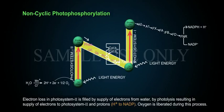Electron loss in photosystem 2 is filled by supply of electrons from water by photolysis, resulting in supply of electrons to photosystem 2 and protons H+ to NADP. Oxygen is liberated during this process.